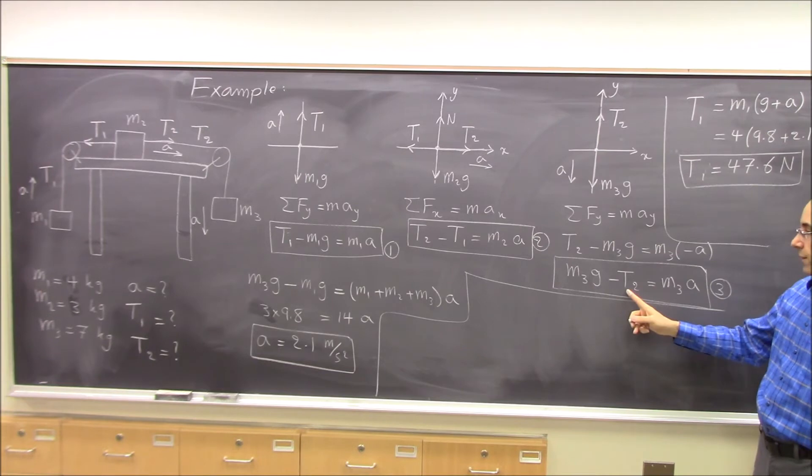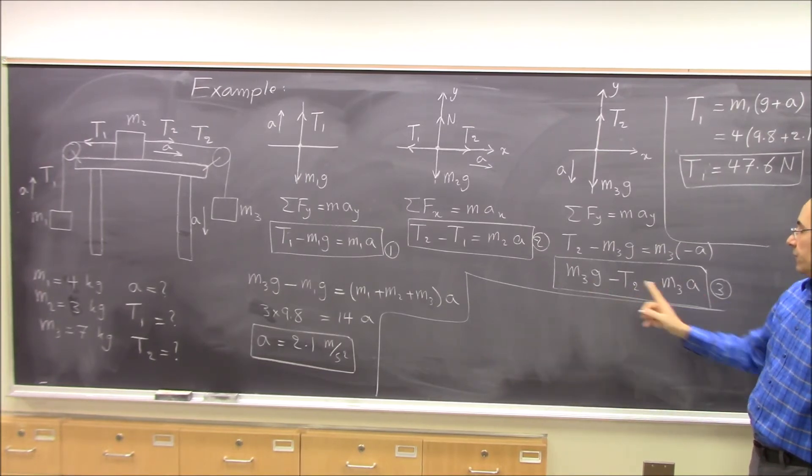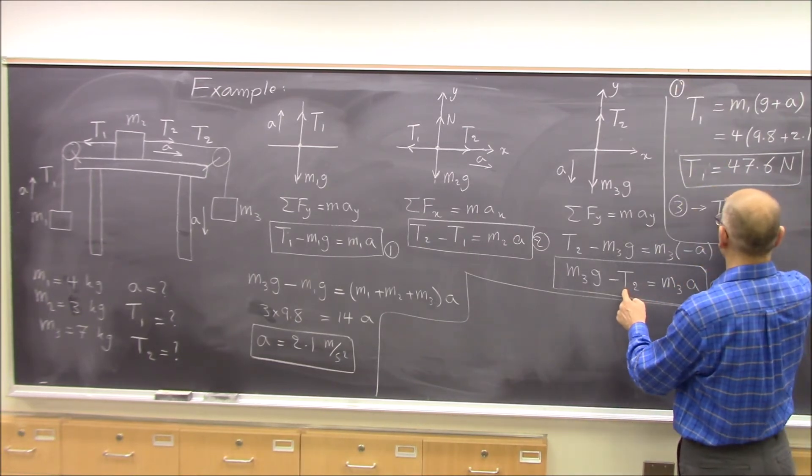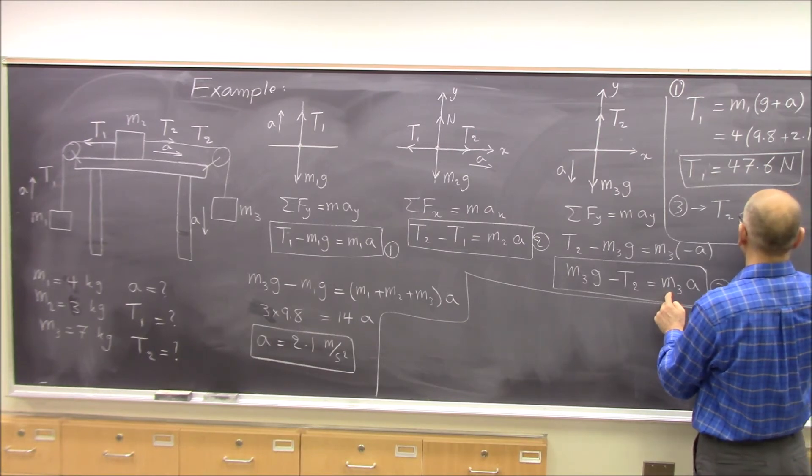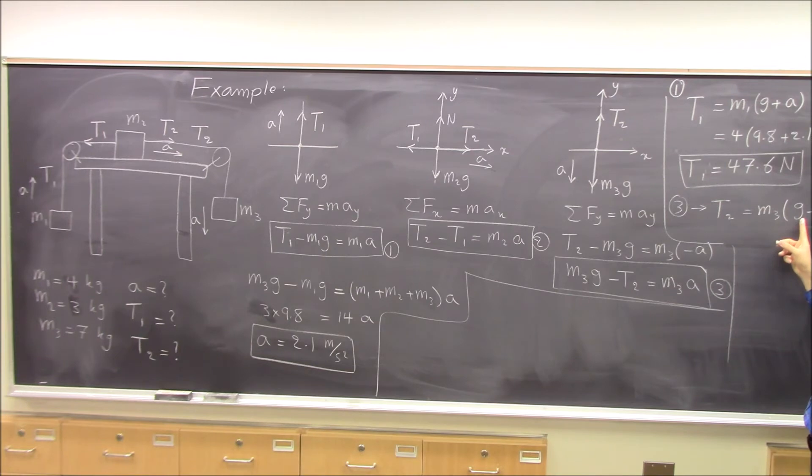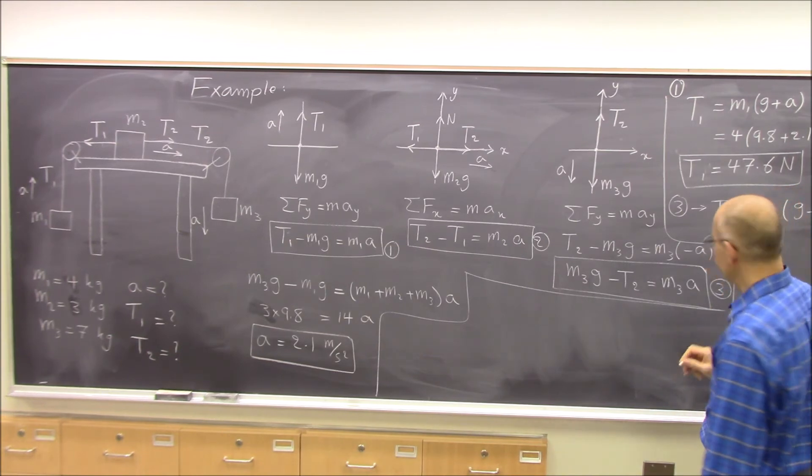You can use this one. You get t2 equal to m3g minus m3a or m3 times g minus a. 9.8 minus 2.1 times m3 which is 7. So t2 will be 53.9.